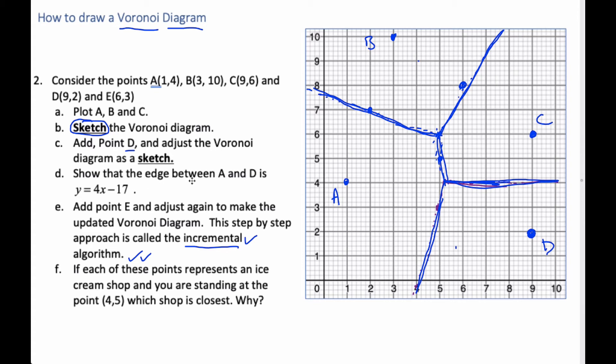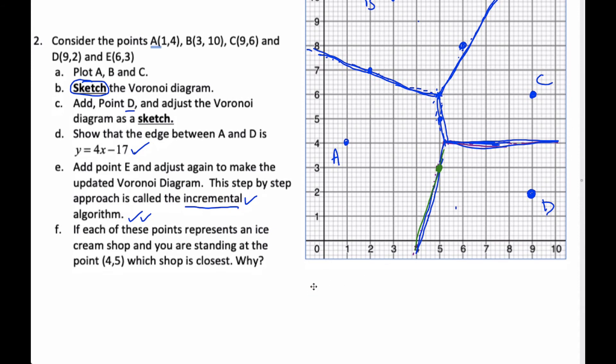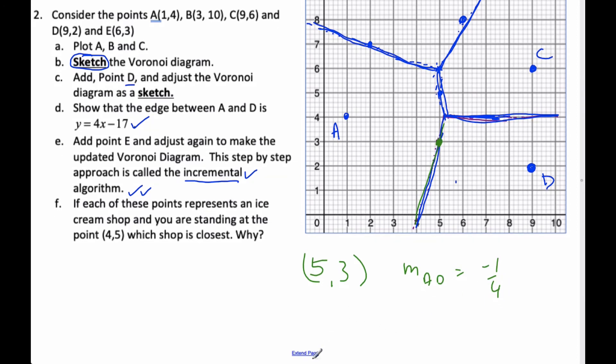And then it says, show that the edge between A and D is this particular equation. Well, one of the things that I know, so I'm looking for this line here, which I'll make green. Well, I can clearly see by symmetry that this is down one and over four, down one and over four. So this is clearly the midpoint. And so the midpoint is five comma three. And I can see the slope here is one negative to the right four. So the slope of A, D is equal to negative one fourth. So that means my perpendicular slope for A, D is equal to four.